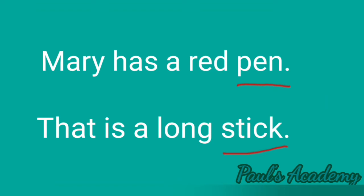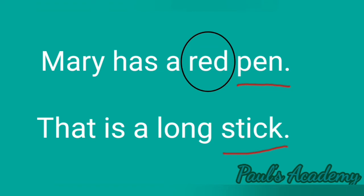In the first sentence, to describe the naming word pen, the word red is used — red pen. In the second sentence, to describe the naming word stick, the word long is used — long stick. So describing words describe a naming word.